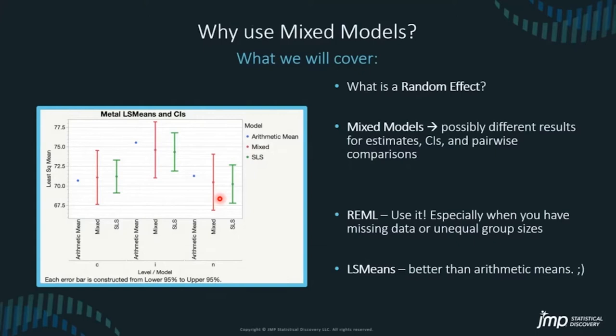Why do we use mixed models? What is a random effect? Mixed models can lead to different results for estimates, confidence intervals, and pairwise comparisons. The estimation method we prefer with mixed models is REML, as opposed to the old-school expected mean squares, particularly when you have missing data or unequal group sizes. We want to focus on LS means rather than arithmetic means — most of the time we're not looking at arithmetic means anymore, and every once in a while someone notices the means don't match and asks why.